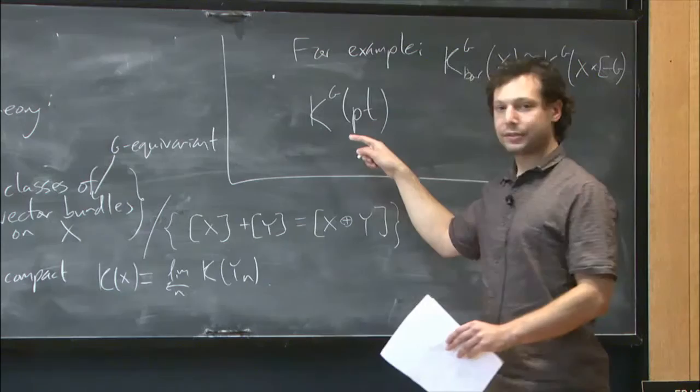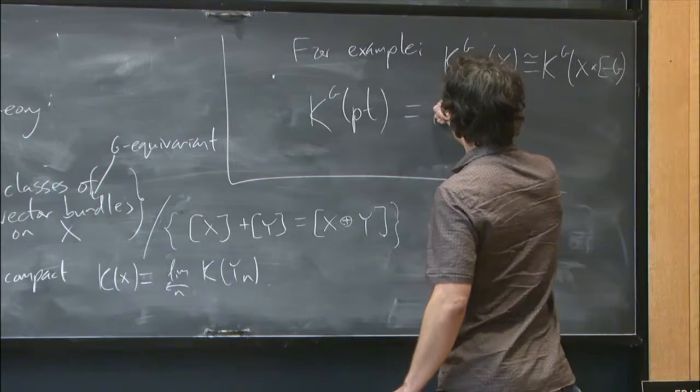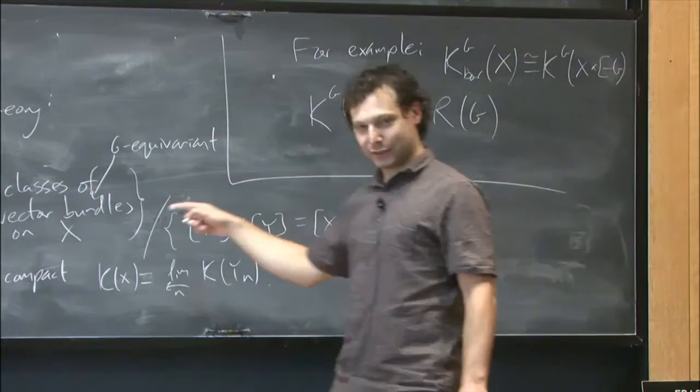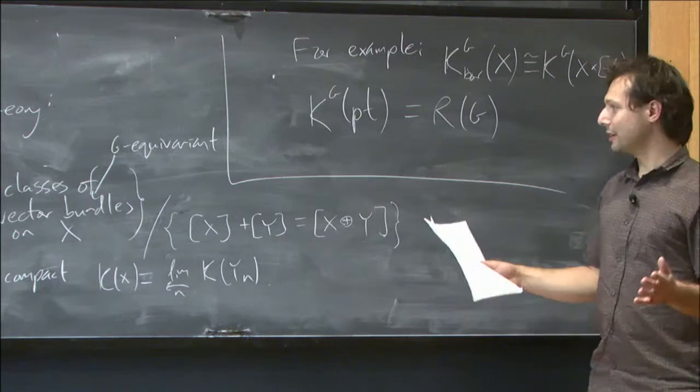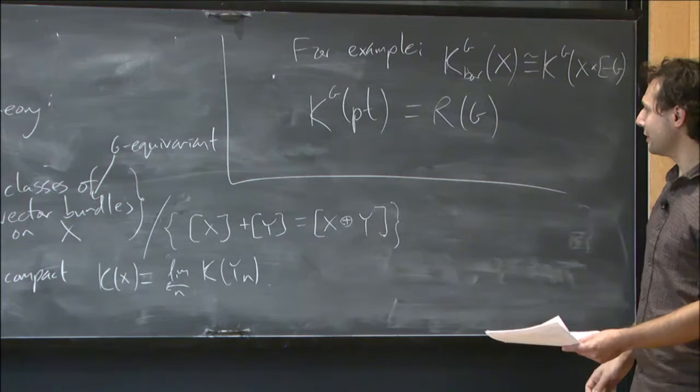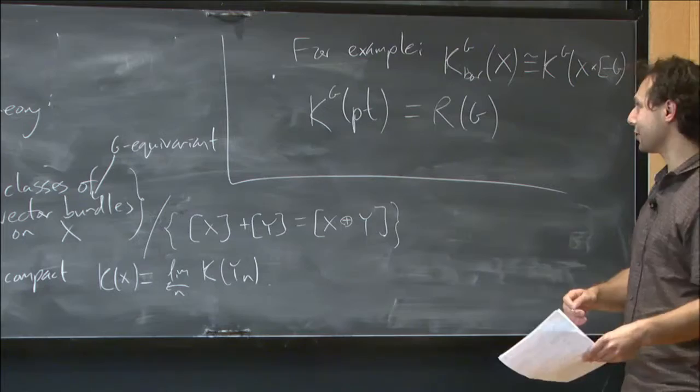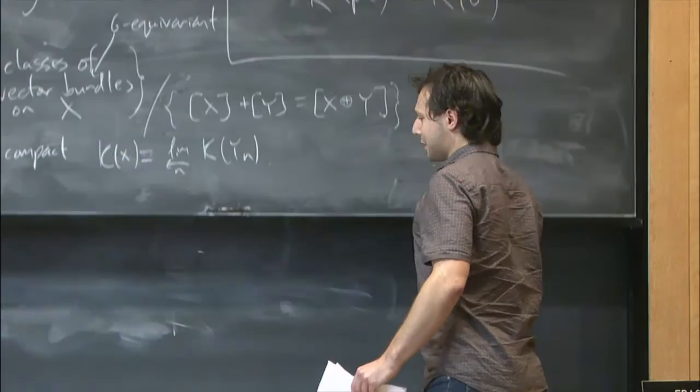So if I take the genuine G-K-theory of a point, what's that? Well, I claim that that's also known as the representation ring of G, because an equivariant vector bundle over the point is just a representation. So I'm looking at the ring whose elements are integer linear combinations of representations of G over the complex numbers, and where addition is given by direct sum of representations, multiplication is given by the tensor product.